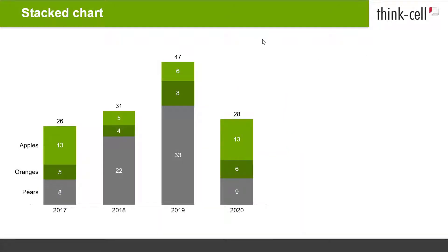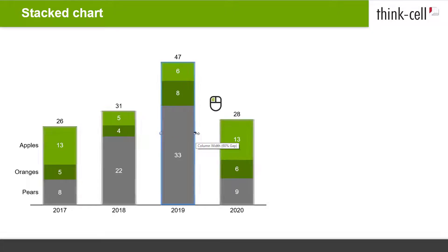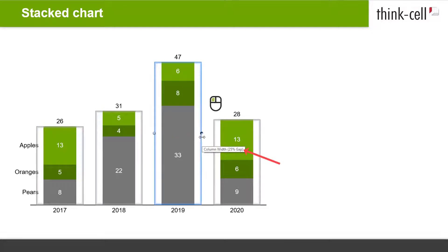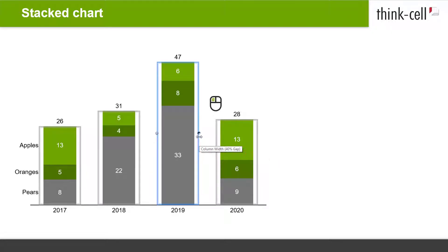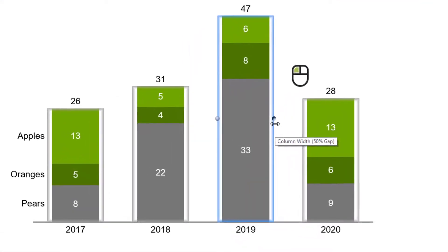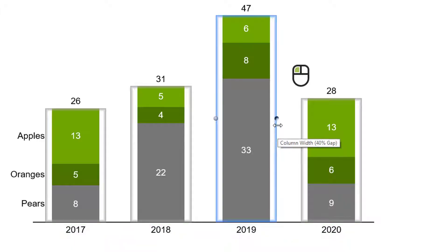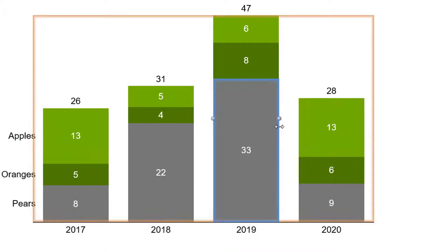You may also adjust the width of the columns or bars in your chart. Click on a segment and drag one of the handles that appear. While dragging, a tooltip shows the resulting gap. The gap width is displayed as a percentage of the column width — a value of 50%, for instance, means that each gap is half as wide as a column. Release the mouse button when you are satisfied with the column width.